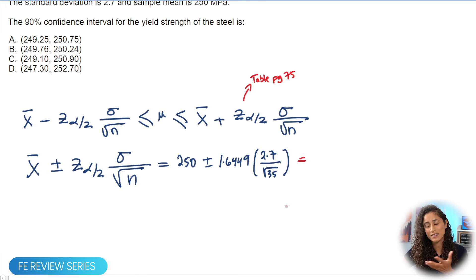Now, if you guys plug in these numbers in your calculator, for the 250 minus this term, you're going to get 249.25. And then for the second term, where we add these two terms, we're going to get 250.75. So the answer is going to be A.